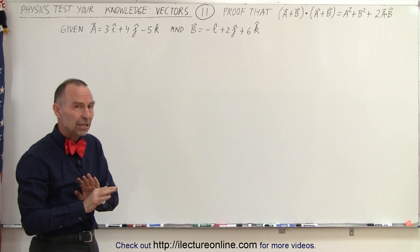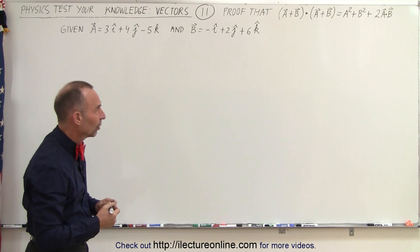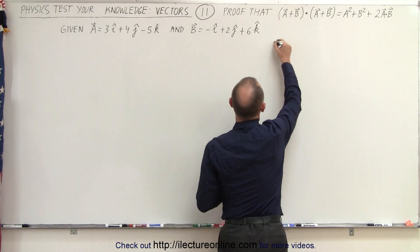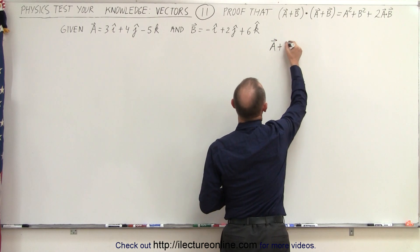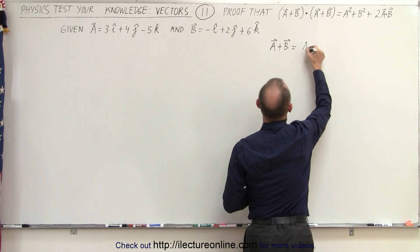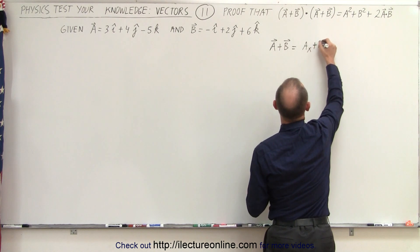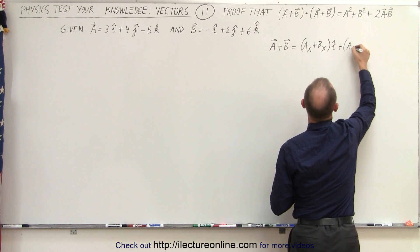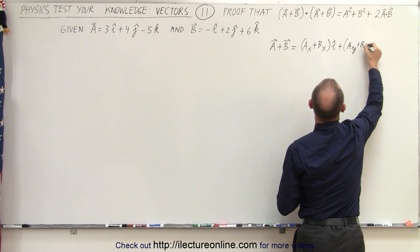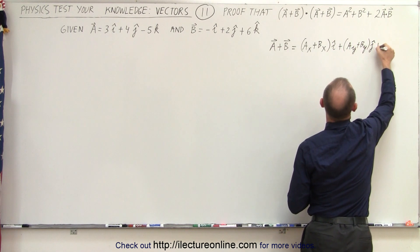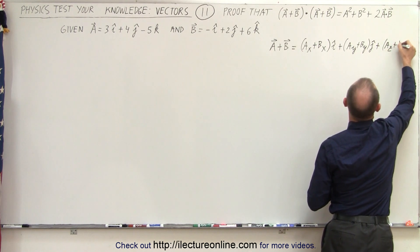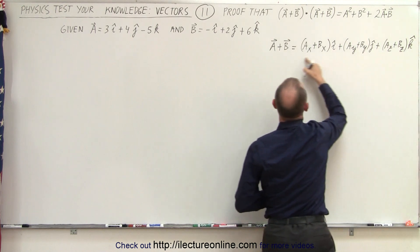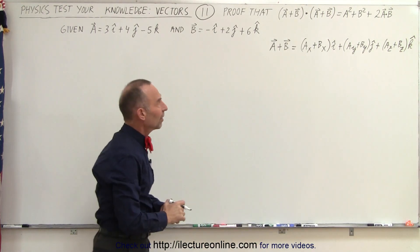So let's first do it for any two arbitrary vectors, which means that if I'm going to add a plus b together, I can say that the vector a plus the vector b can be written as (ax + bx) in the i direction, plus (ay + by) in the j direction, plus (az + bz) in the k direction. So we know that this is the sum of two vectors in an arbitrary sense.